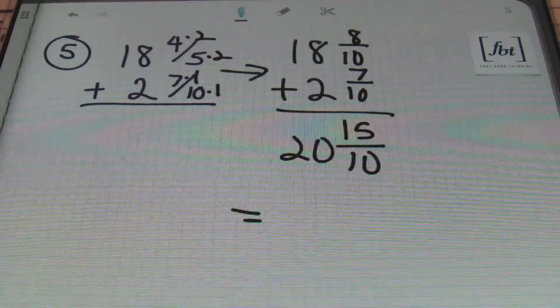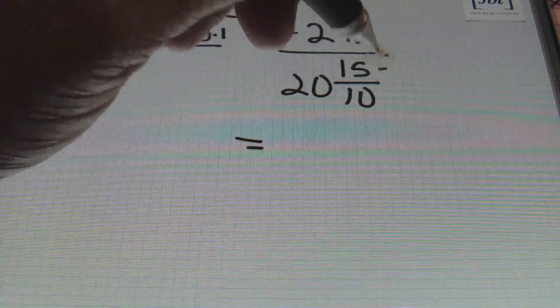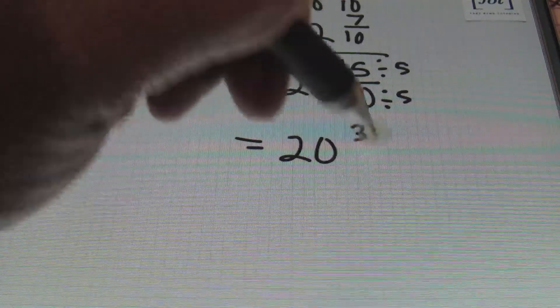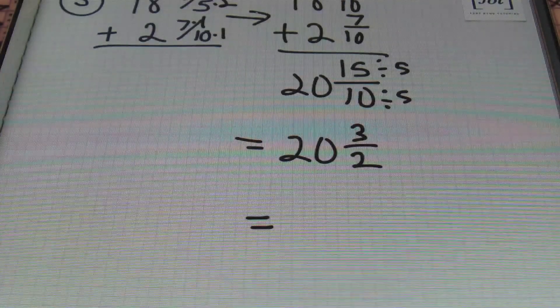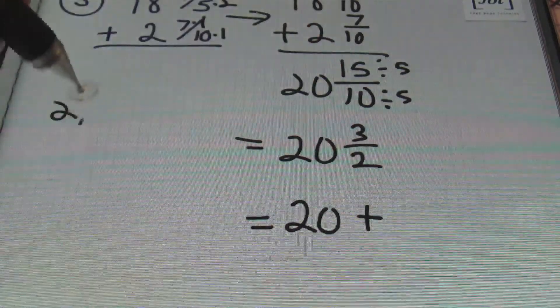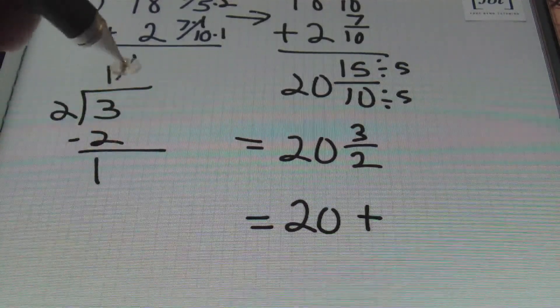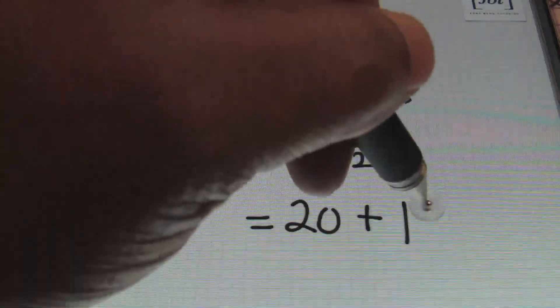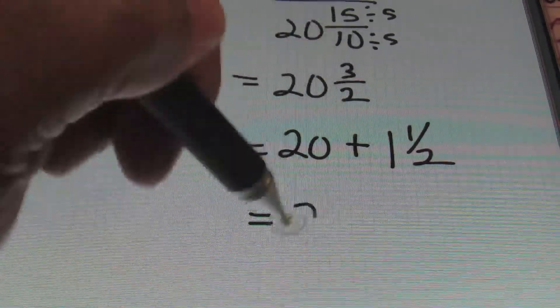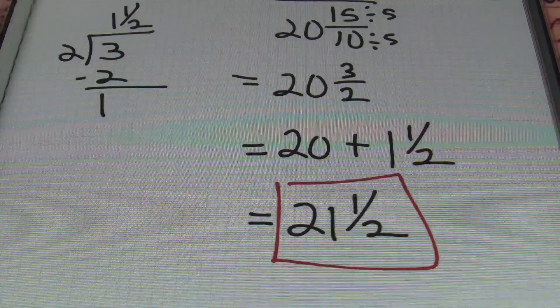However we are not stopping here because the 15 and the 10 can both be reduced by 5. So simplifying both of these numbers by 5 you end up with 20 and 3/2. Once again this 3/2 needs to be converted into a mixed number. So I'll be adding 20 plus. Remember this 2 will go into 3 one time. And 1 times 2 is 2 with a remainder of 1 to give me 1 and a half as a result here. So this is 20 plus 1 and a half. And adding these 2 values together. 20 plus 1 is 21. And I'll bring down my 1/2 to give me a result of 21 and a half. And done.